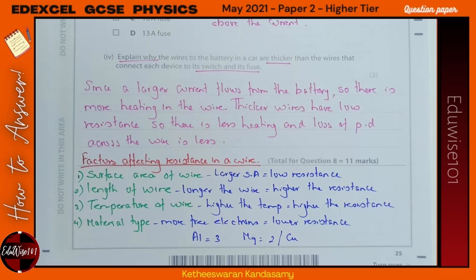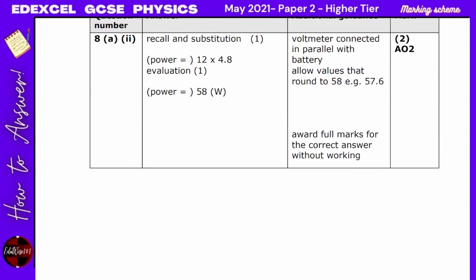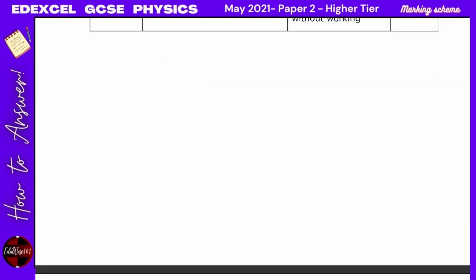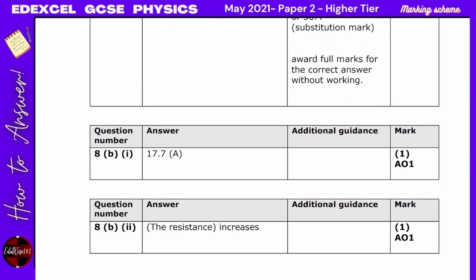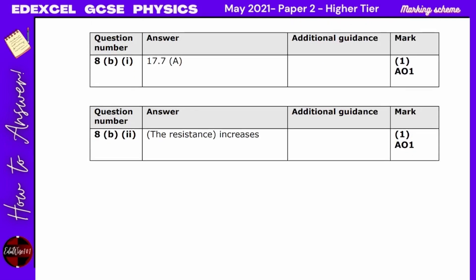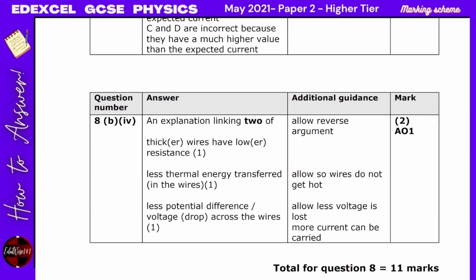For the marking scheme on Question 8: voltmeter connected in parallel with the device, ammeter connected in series. Power was 57.6 W rounded to 58 W. Energy was 3,024 J (approximately 3,000 J). Total current was 17.7 A. Resistance increases when a device is switched off. The 5 A fuse was correct. Thicker wires have lower resistance — less thermal energy transferred and less potential difference drop.